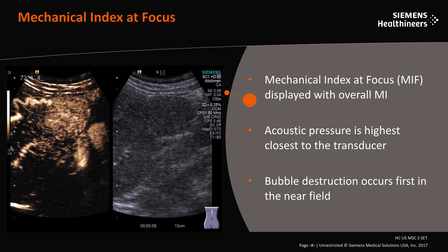The acoustic pressure will always be the highest closest to the transducer, despite any focal zone compensation, frequency, or power output level. There are two mechanical index levels displayed on the image screen: the overall mechanical index (MI) and the mechanical index at focus (MIF). The mechanical index at focus displays an accurate account of the MI at the level of the focal zone, which in this example is lower than the overall MI of the image.